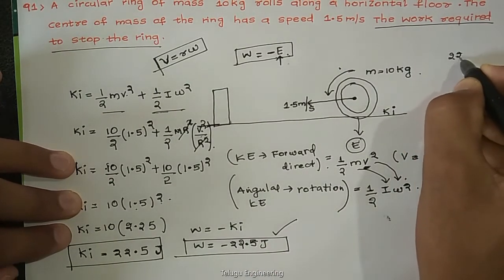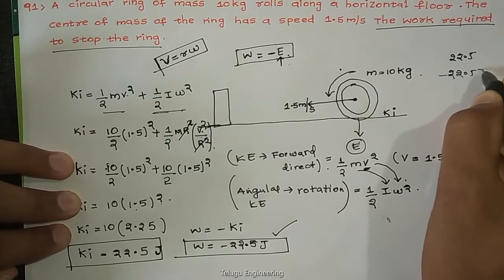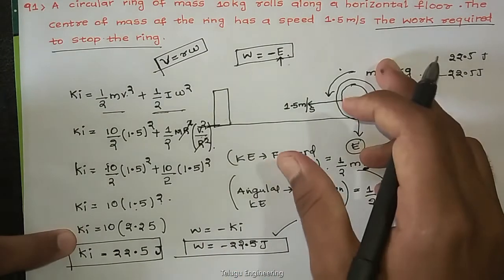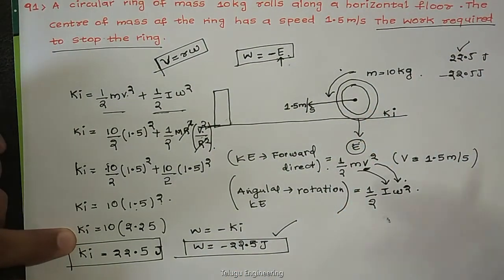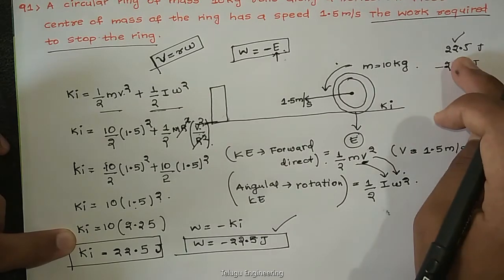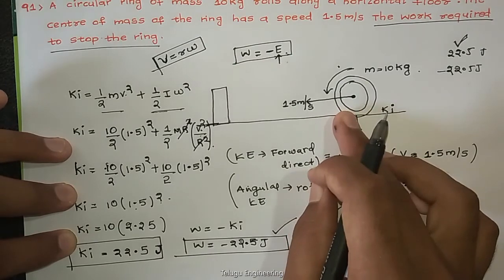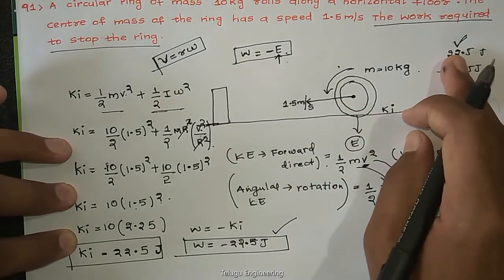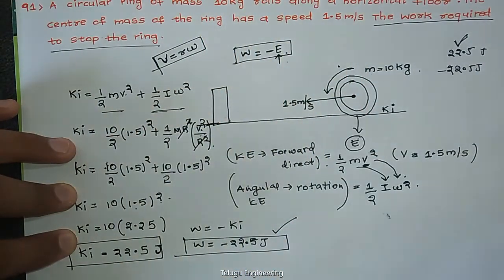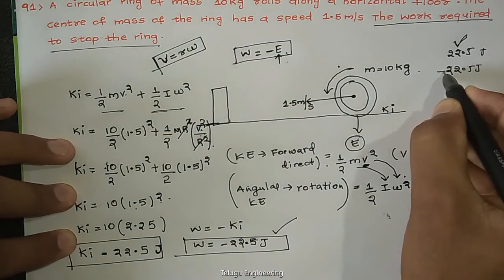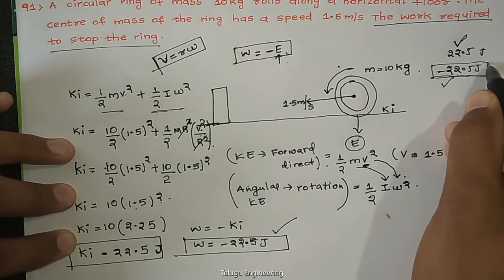They will give options as 22.5 and minus 22.5 joules. Most people will correctly find the energy of the object as 22.5 joules but may select the wrong option. The key point is: energy required to stop the ring means energy is wasted, so the answer is negative of energy, which is minus 22.5 joules. Don't make mistakes in these types of questions.